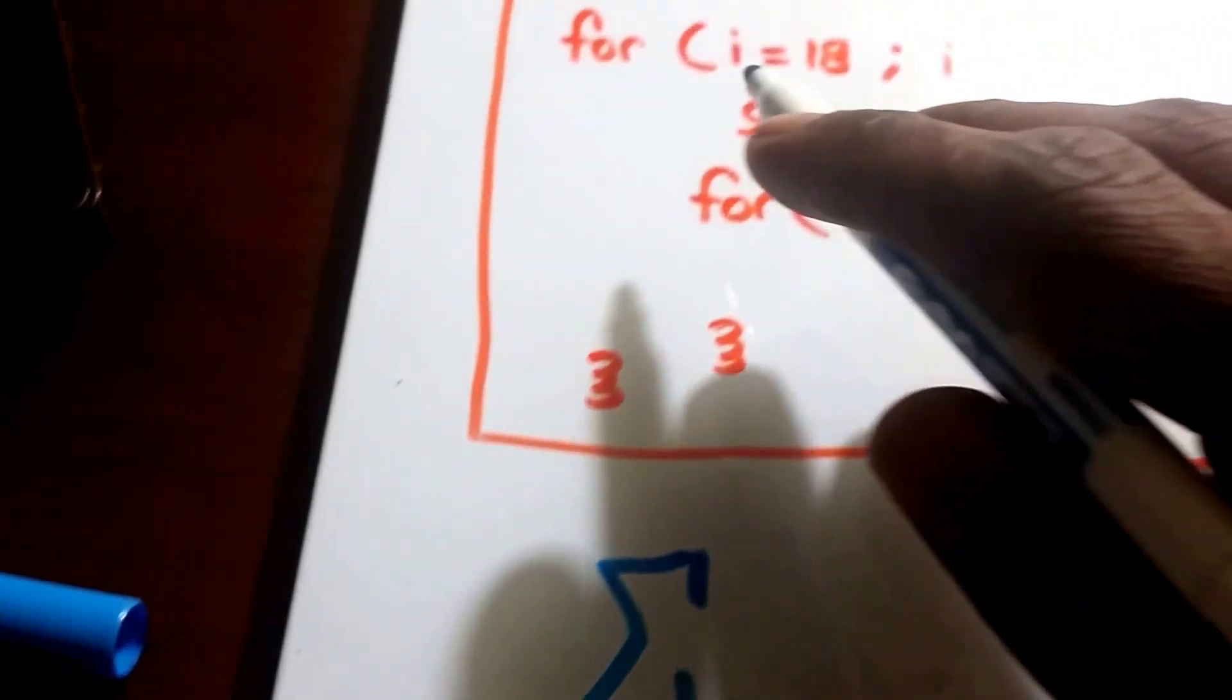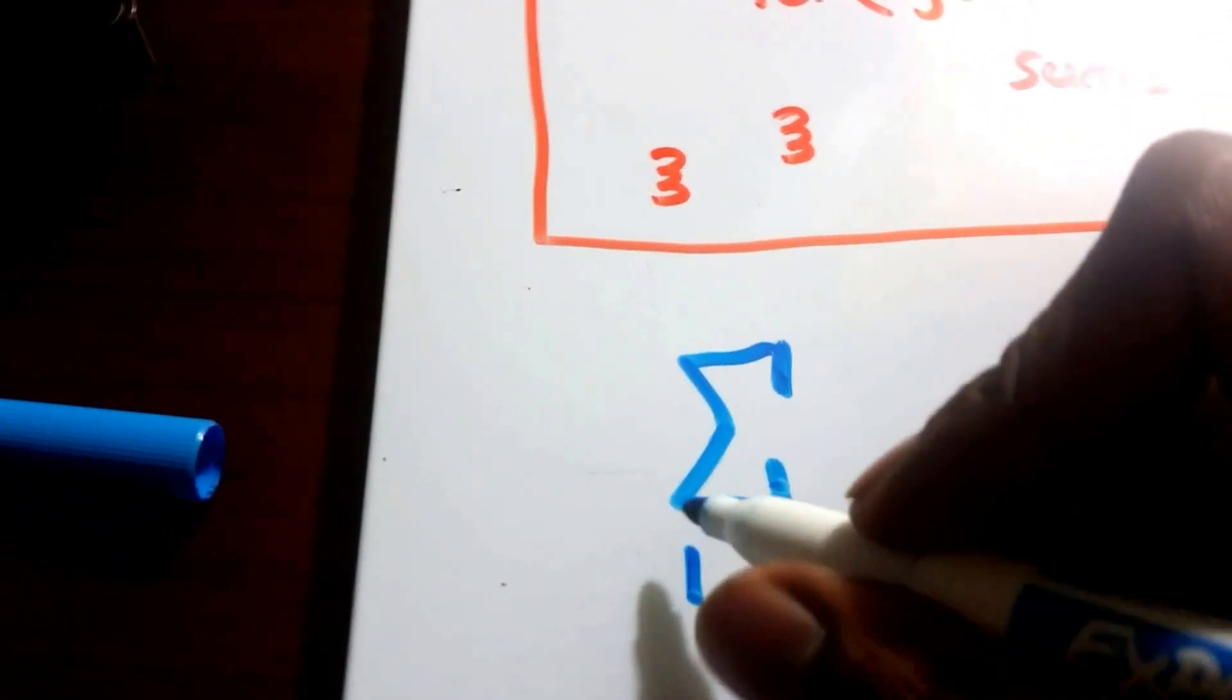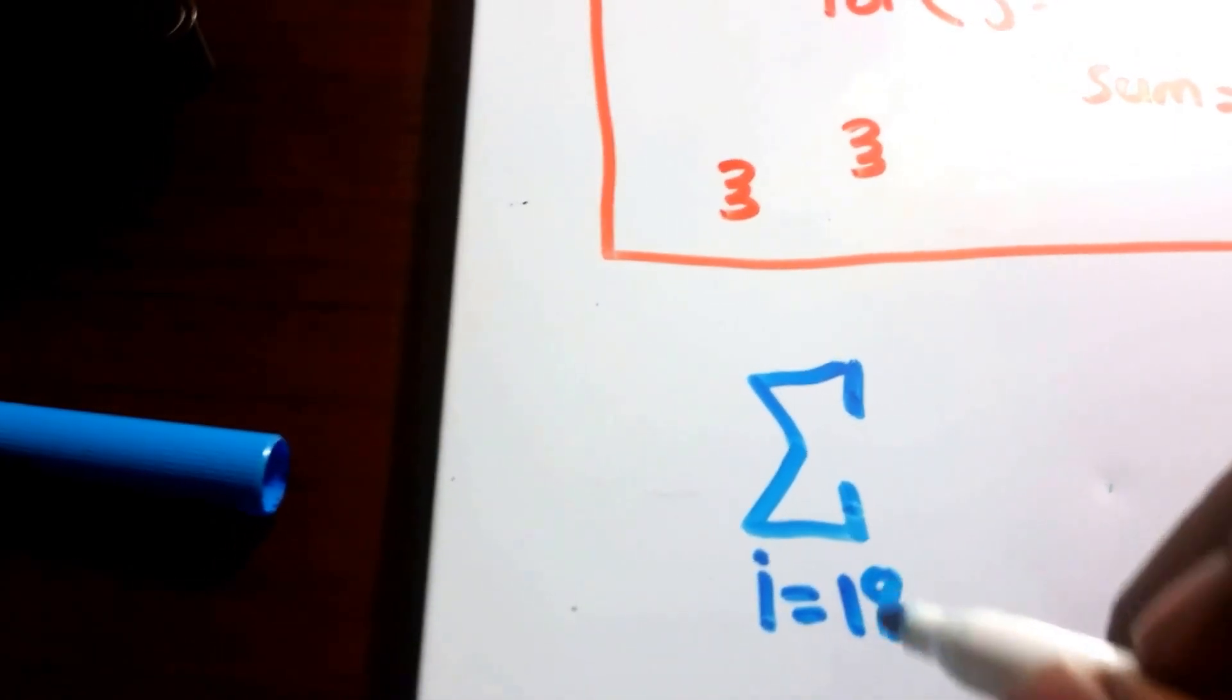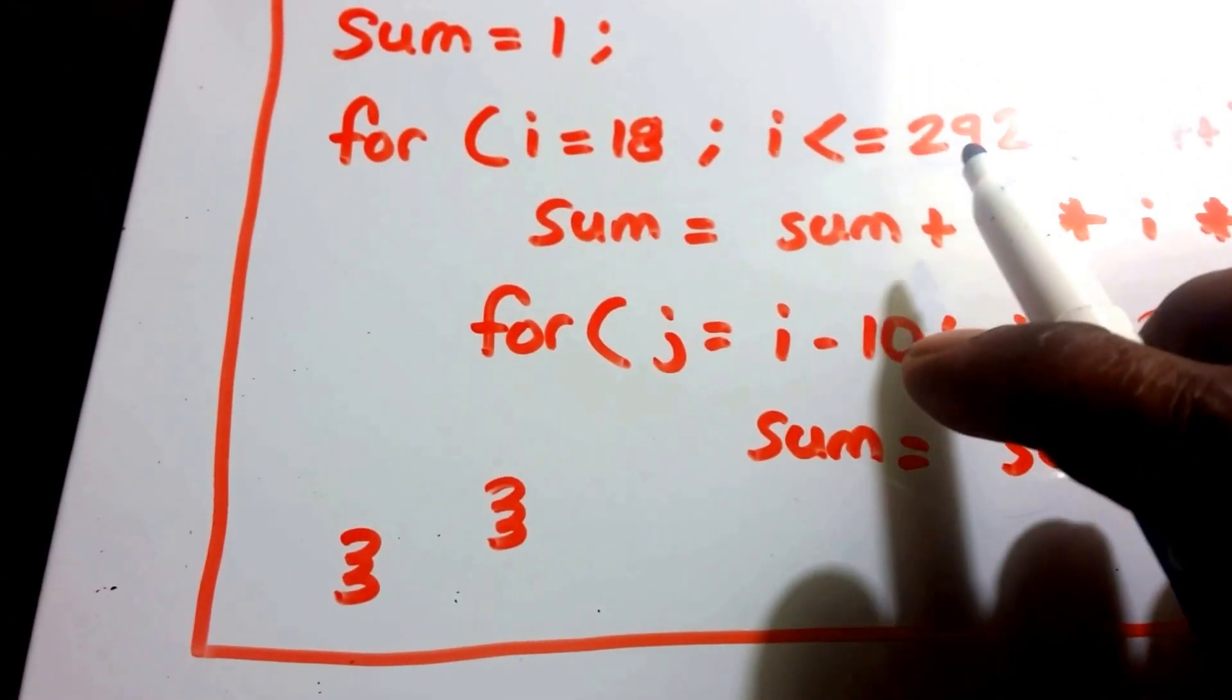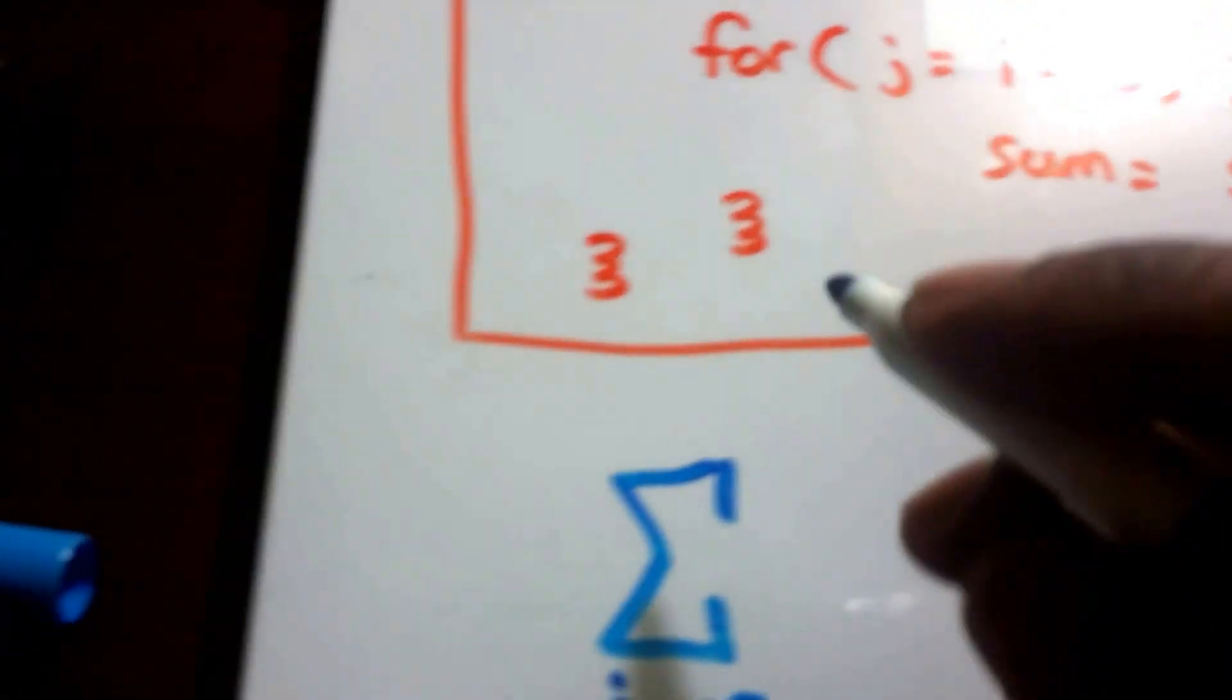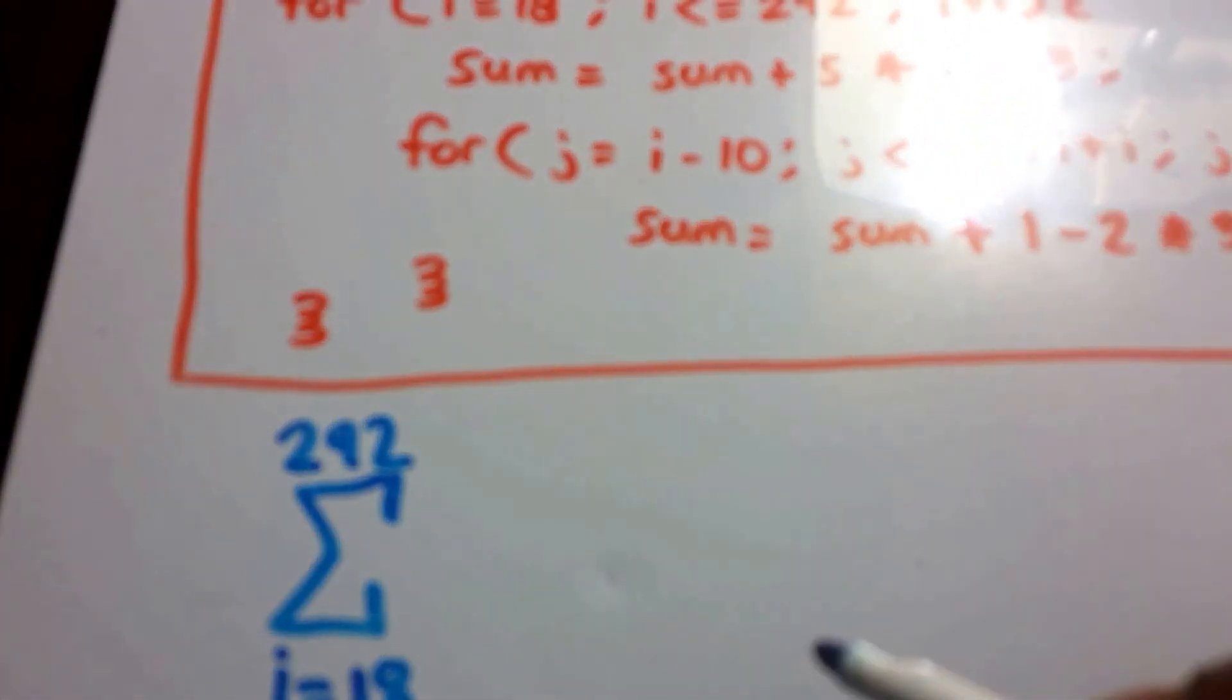So the first loop runs from i equals 18. So down here, i equals 18, okay, and it runs until i equals 292. So we just have 292 here, okay?